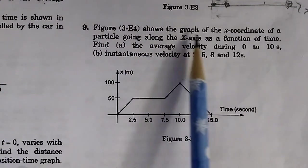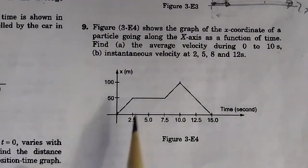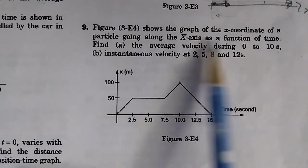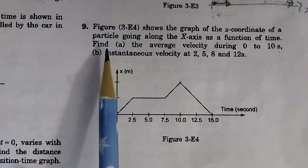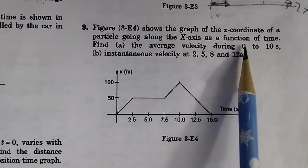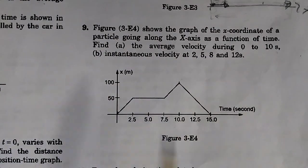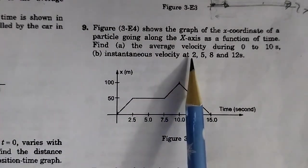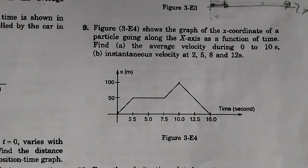Number 9. We are given a graph of the x-coordinate of a particle as a function of time. And we need to find the average velocity during 0 to 10 seconds part A, and part B instantaneous velocity at 2, 5, 8, and 12 seconds.